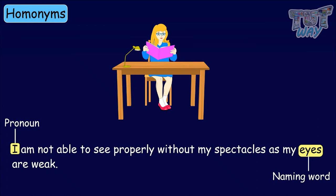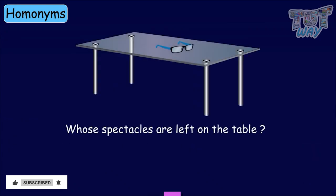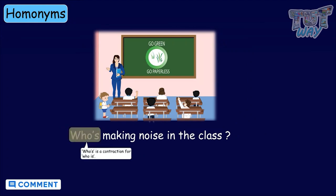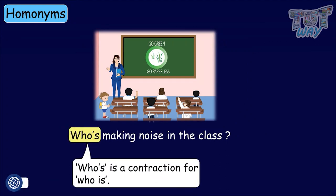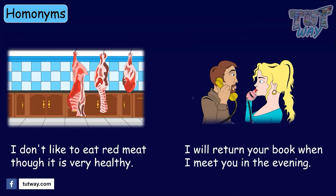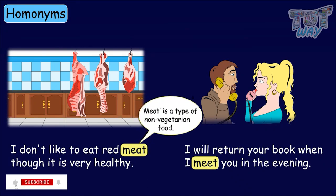So kids, now the concept of a homonym is clear to you. Let's see some more examples. Whose spectacles are left on the table? Whose means belongs to whom. Who's making noise in the class? Who's is a contraction for who is. Meat and meet are homonyms — one means a type of non-vegetarian food, and the other means meeting somebody.